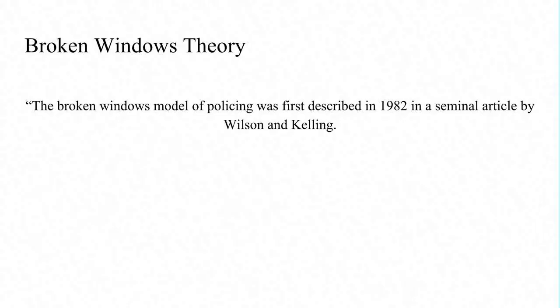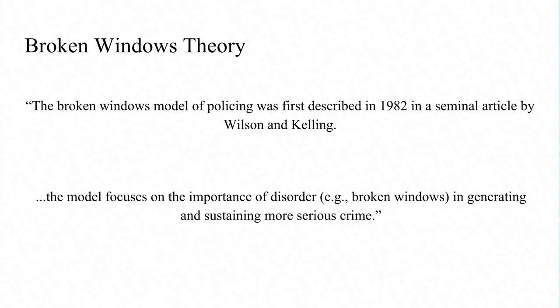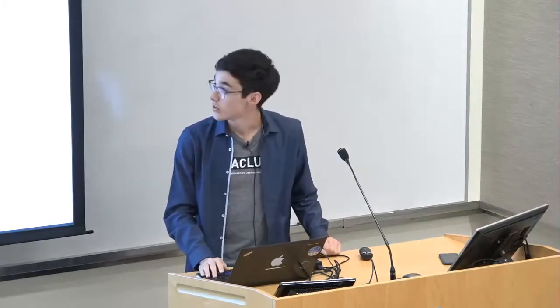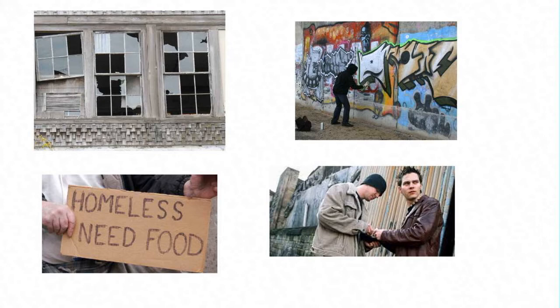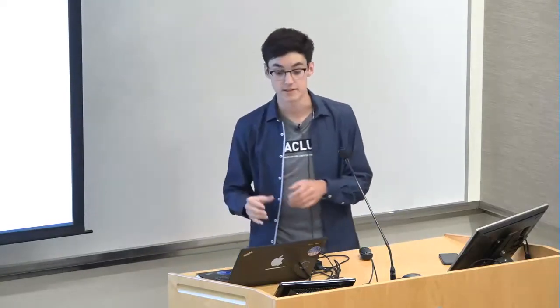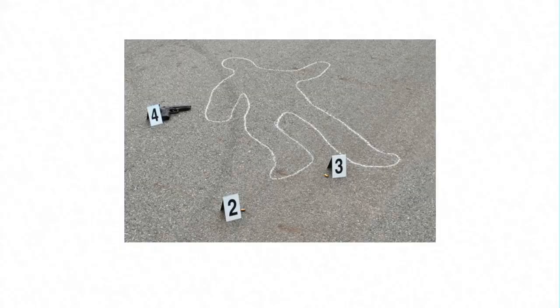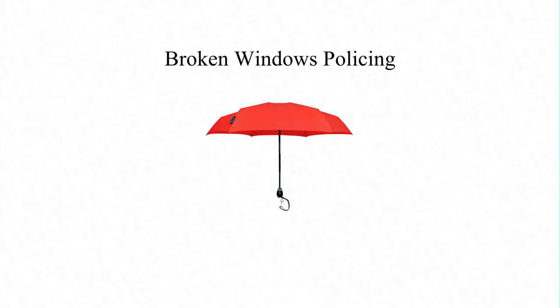Broken windows theory is a model of policing first described in 1982. It focused on the importance of disorder — for example, broken windows and vandalism — as leading to more serious felonious crime like murder. The general understanding is that when you have a state of disorder in a community, represented by vandalism, broken windows, drug dealing, homelessness, or panhandling, that sense of disorder and perceived scarcity of law enforcement leads people to commit more aggressive crimes. Broken windows policing is a big umbrella containing many different policies and theories.